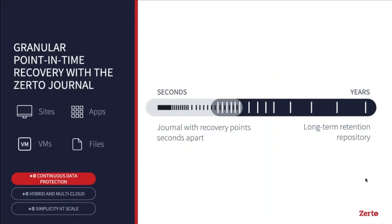On granular point-in-time recovery: we'll be seconds behind your production environment, but not just the latest point in time. In a 24-hour period we'll have over a thousand recovery points in the journal. That gives you the granularity to recover from the exact point in time you want — rather than just last night's backup or an incremental from four hours ago. You can pinpoint: it was 10 a.m. this morning, so I'll go back to 9:59:55. And it's not just for full DR — we can do individual applications, individual VMs, full sites, or even individual file and directory restores from the journal.